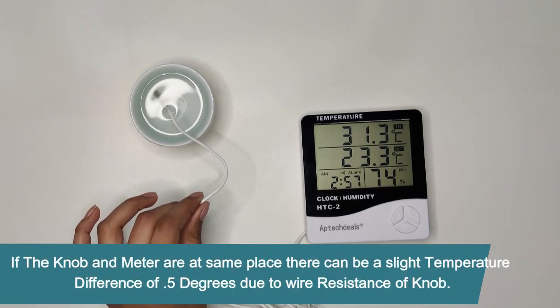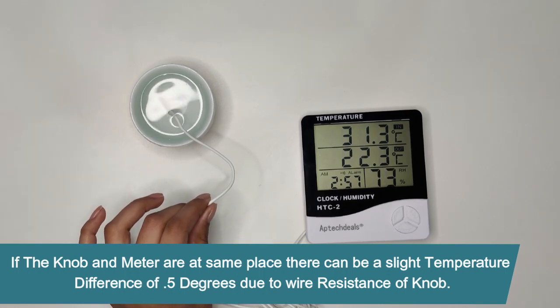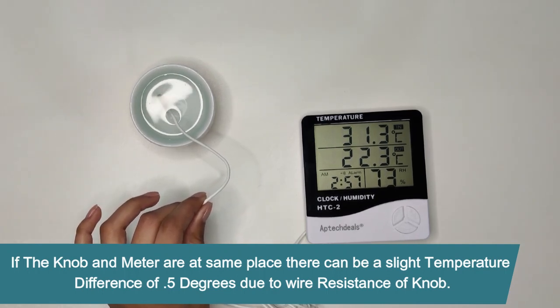If the knob and meter are at the same place, there can be a slight temperature difference of 0.5 degrees due to wire resistance of the knob.